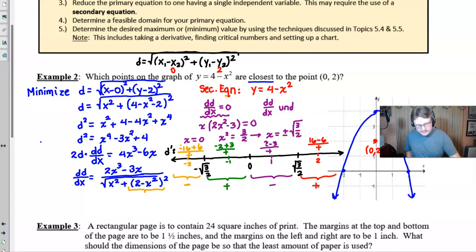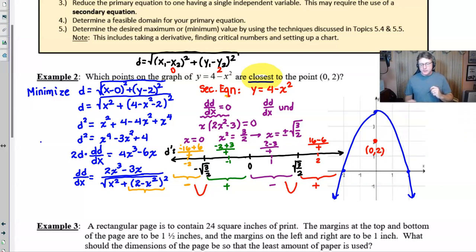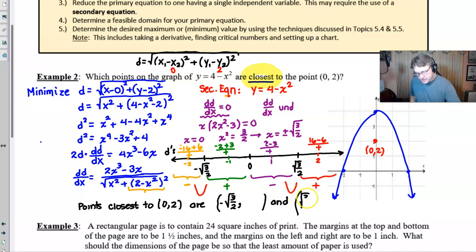But we're interested in finding the relative minimum, right? Because of the word closest. So a minimum is found whenever our derivative changes from a negative to a positive. And that happens twice here. So when it asks what points on this graph are going to be closest to the point (0, 2), those are going to be the points when the x is the square root of 3 over 2, or opposite of square root of 3 over 2. The points closest to our given point (0, 2) are the following order pairs: negative root 3 halves, comma something, and positive root 3 over 2, comma something.